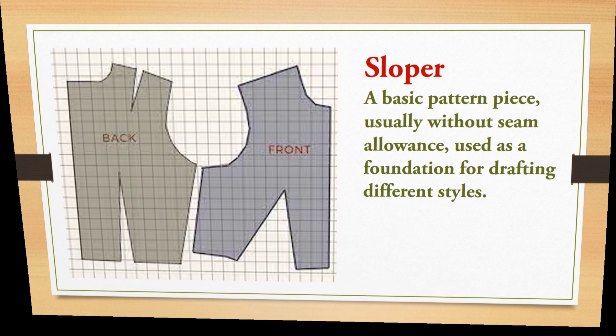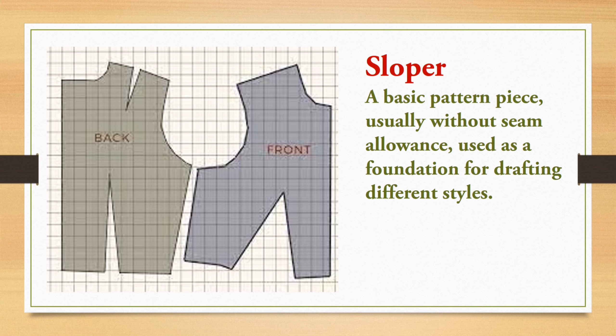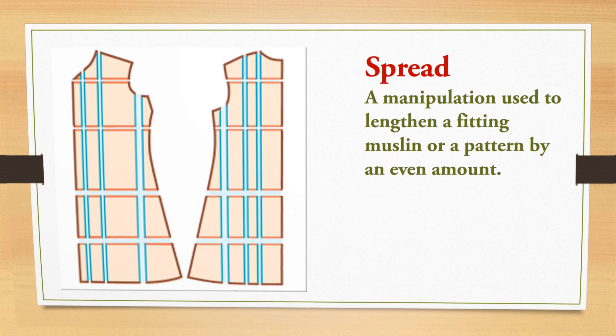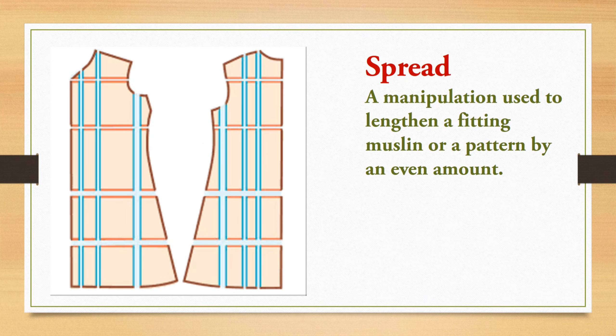The first term is sloper. We have used this term many times in drafting videos. Sloper means a basic pattern piece that is usually the foundation of different pattern styles. It doesn't have seam allowances. The basic bodice block or basic sleeve block are all collectively called the sloper or the basic block.